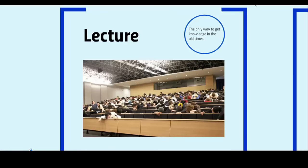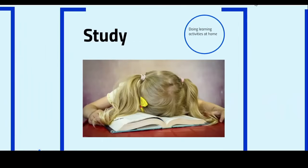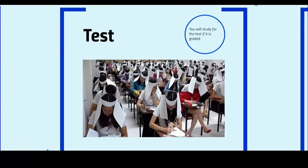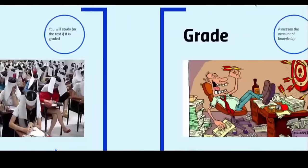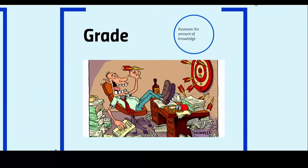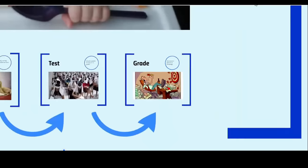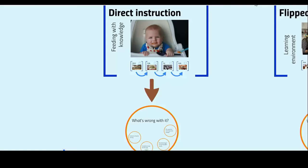There was no internet, books were very boring, and if they were only available in the library or very expensive, it was just really the best way for you to learn. After the lecture you go home and study — you do your homework and maybe some other learning activities. Then, in order to force you to learn, there is a test. If you know there is a test, you will be intrinsically motivated to study, and in the end you get a grade — either a number or a letter — which is supposed to assess the amount of knowledge you have accumulated.